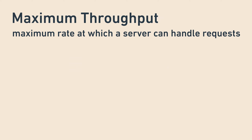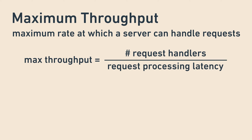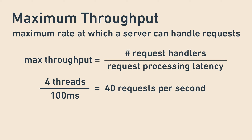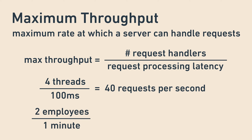In simple scenarios, you can estimate max throughput as the number of request handlers divided by the request processing latency. For example, if you have four threads handling requests and each request takes 100 milliseconds, then a simple estimate of your max throughput is 4 threads divided by 100 milliseconds, which equals 40 requests per second. Or for an ice cream shop, if you have two employees each taking one minute per customer, that's two customers per minute.